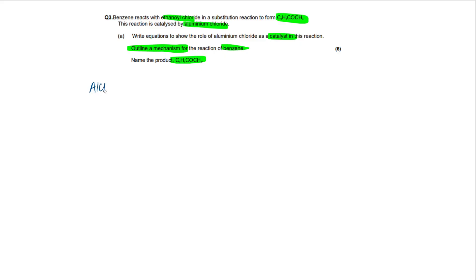So aluminium chloride, let's start by drawing that. So aluminium chloride, AlCl3 due to the Al3+ ion, this is going to react with ethanol chloride. So we've just got our ethanol group, CH3CO, and then it's going to end with Cl. Hopefully you're familiar with naming acyl chlorides by now.